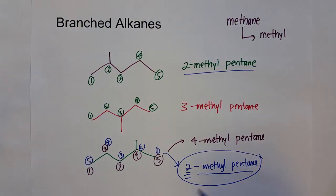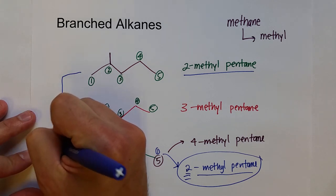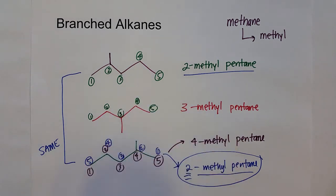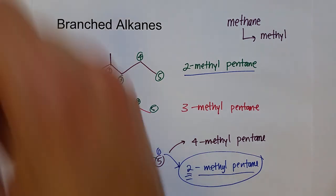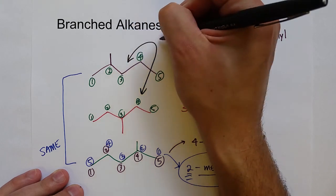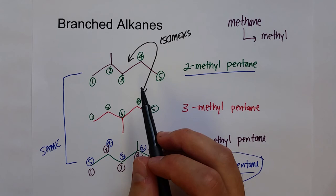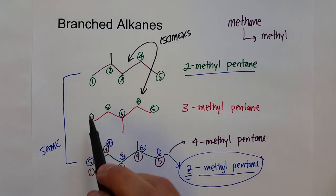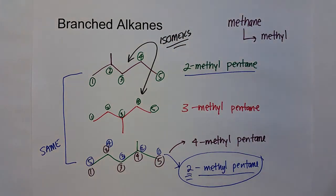So those two molecules are the same. But 2-methylpentane and 3-methylpentane are different molecules — there's no way to rearrange one to make it look exactly like the other. That's why these molecules are called structural isomers. They have the same exact molecular formula — same number of carbons and hydrogens — but they have different structures, different structural formulas. They're put together differently.